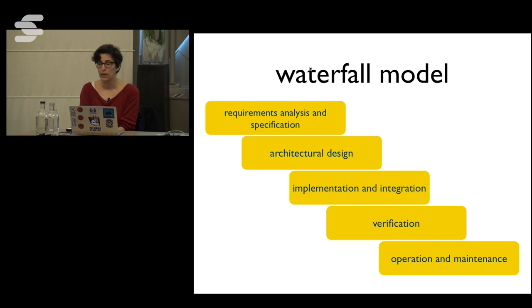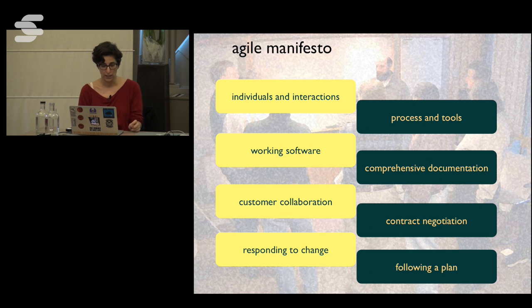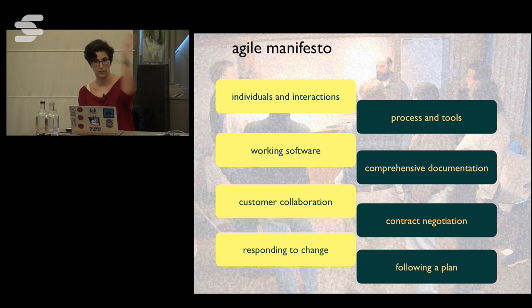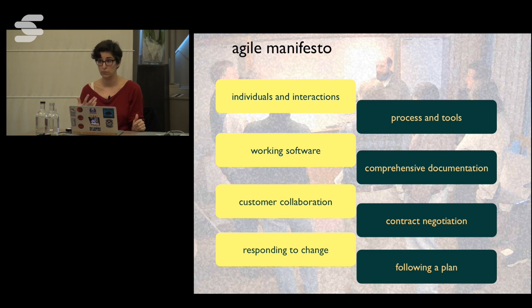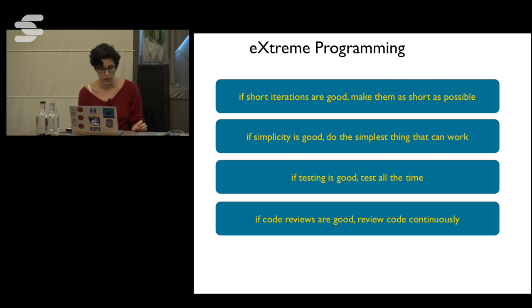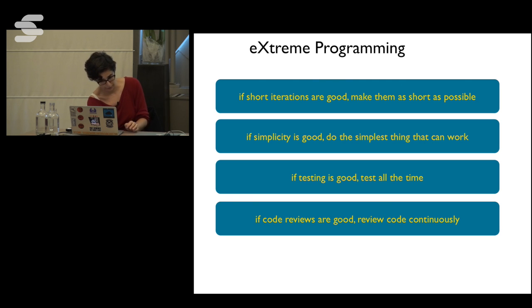Around the 80s, a group got together and came up with what's called the Agile Manifesto. They said we should focus on individuals and their interactions, on working software rather than big documents, on customer collaboration rather than going back two years later, and on responding to change. Extreme programming took this further: if short iterations are good, make them really short; if testing is good, test all the time; if code reviews are good, review continuously.